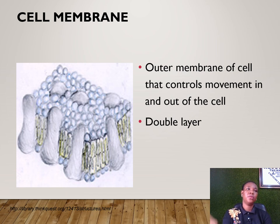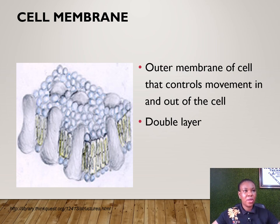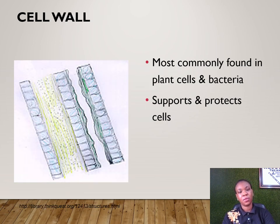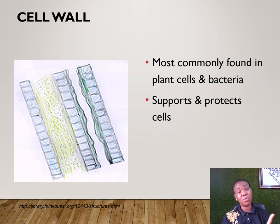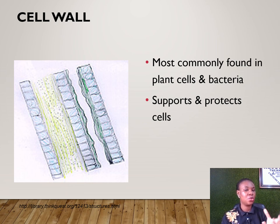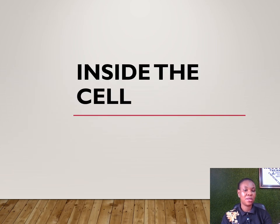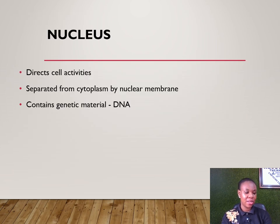The cell membrane is the outer membrane of the cell and controls the movement of materials in and out. It is often double-layered in animal cells. The cell wall is found in plants and bacteria; its main function is to support and protect the cell.